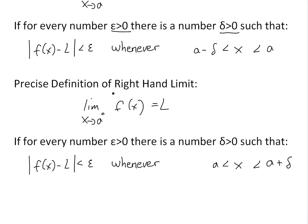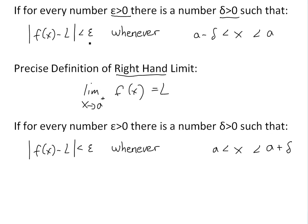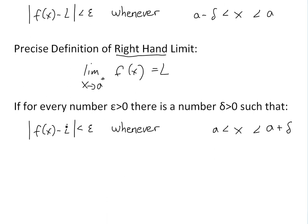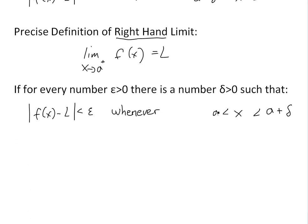Similarly, for the right-hand limit, the precise definition is the exact same thing, but now we have the plus side — you're approaching from the right side. For every epsilon, the same condition holds, except now x is greater than a and less than a plus delta, so it's just really close to a from the right.